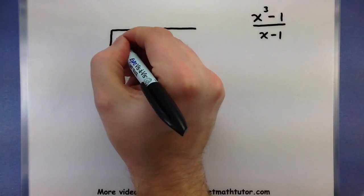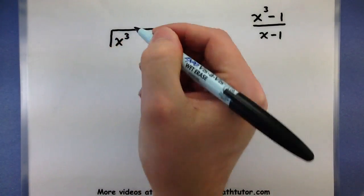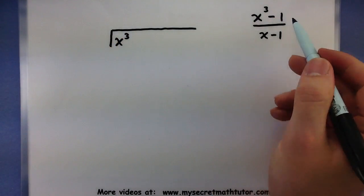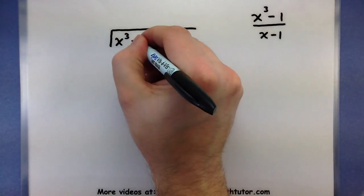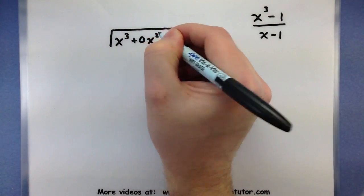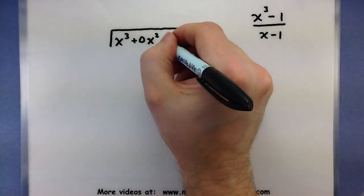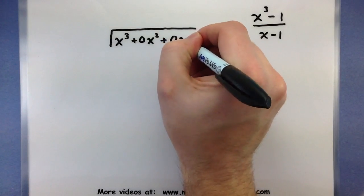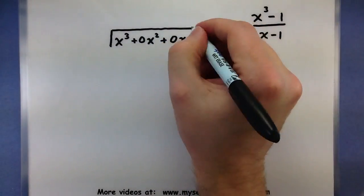So this is what's being divided, x³, and I have to put in all of those missing powers of x. So since I don't have an x², I'll put in a 0x². Since I don't have an x, I'll put in a 0x - 1.